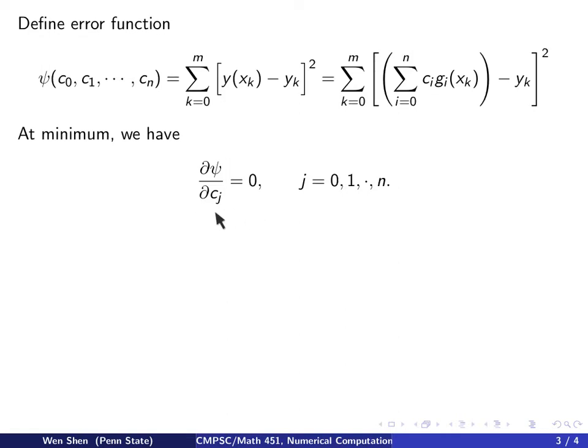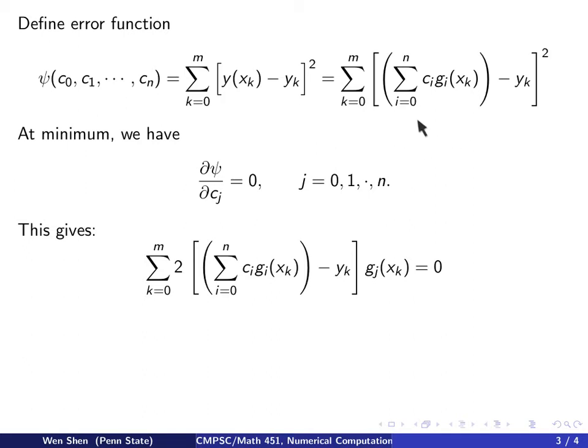The first derivative of ψ with respect to every c with index j shall equal 0, where j runs from 0, 1, to n. Working out the detail, this partial derivative with respect to c_j, by the chain rule, we have 2 times the whole thing here, multiplied by this whole thing, differentiating c_j, treating everything else as constant.